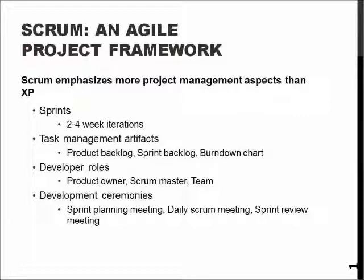Scrum is an Agile model. It has some peculiar terminology. For example, in Scrum instead of iterations we talk about sprints. Sprints are basically an iteration within a project lasting two to four weeks, and they are used to develop, test, and integrate a certain set of features into the product.